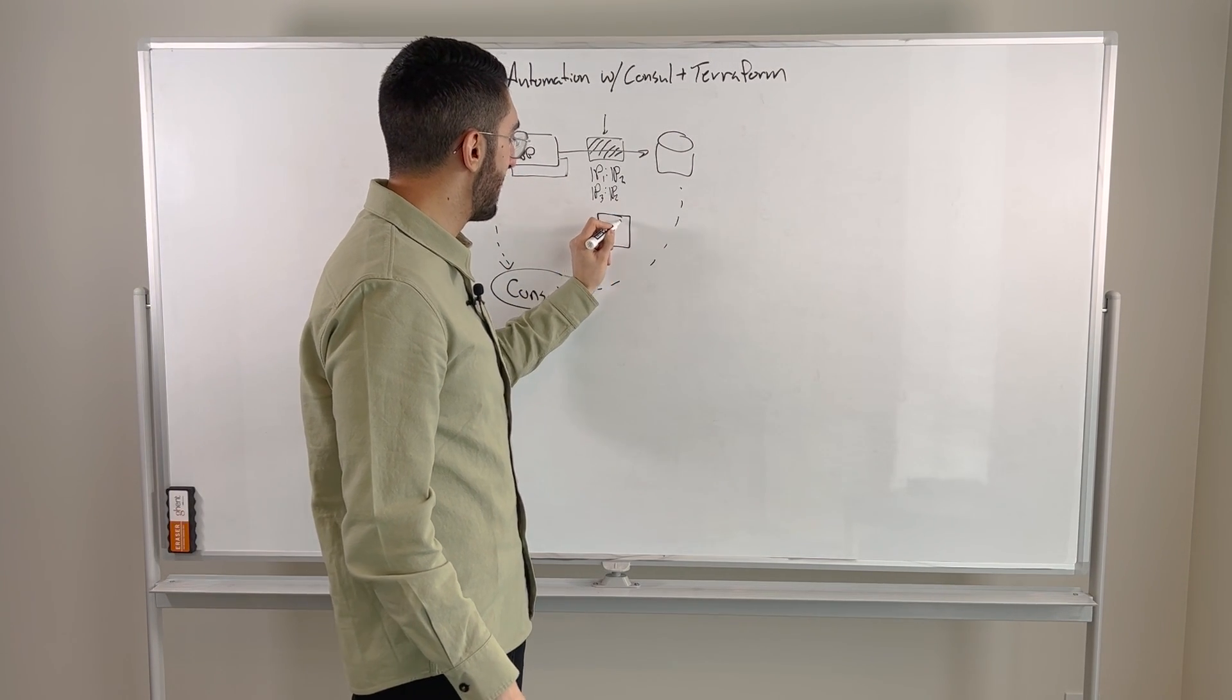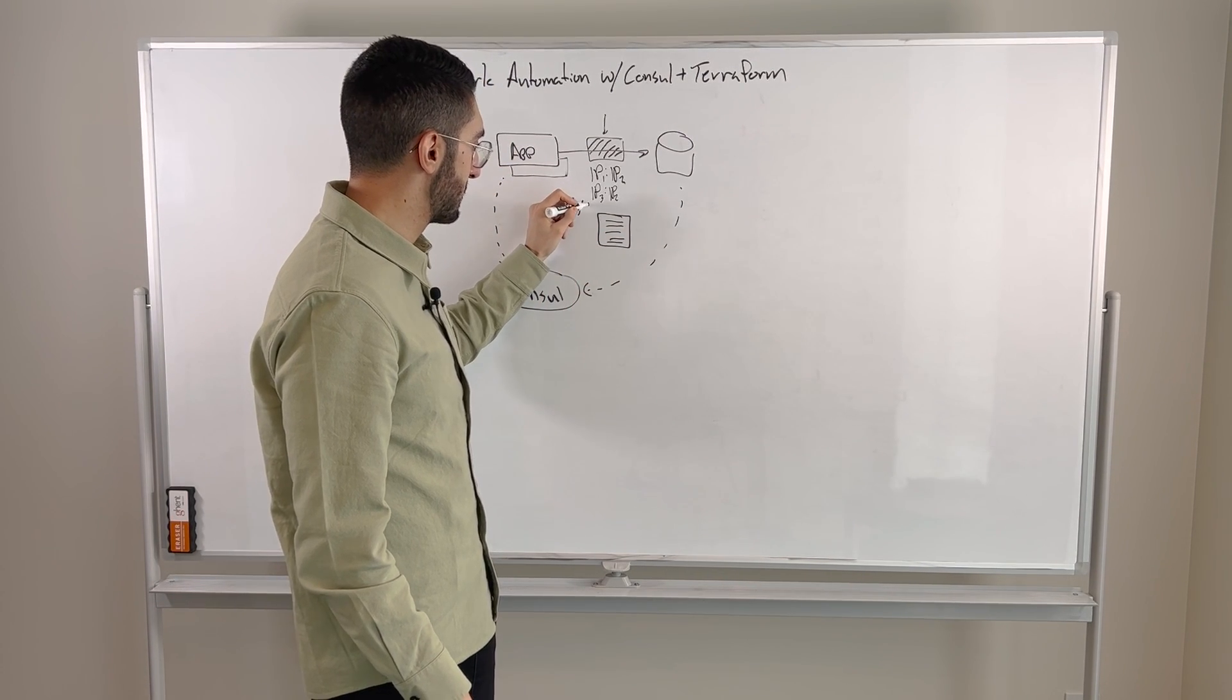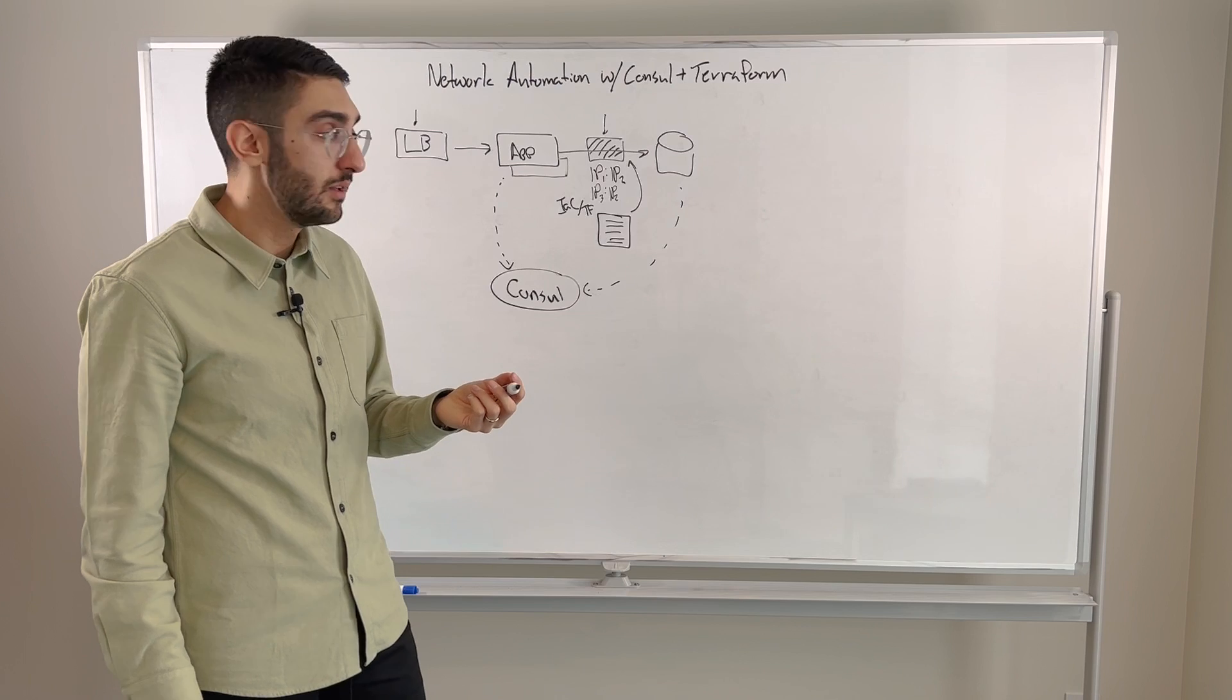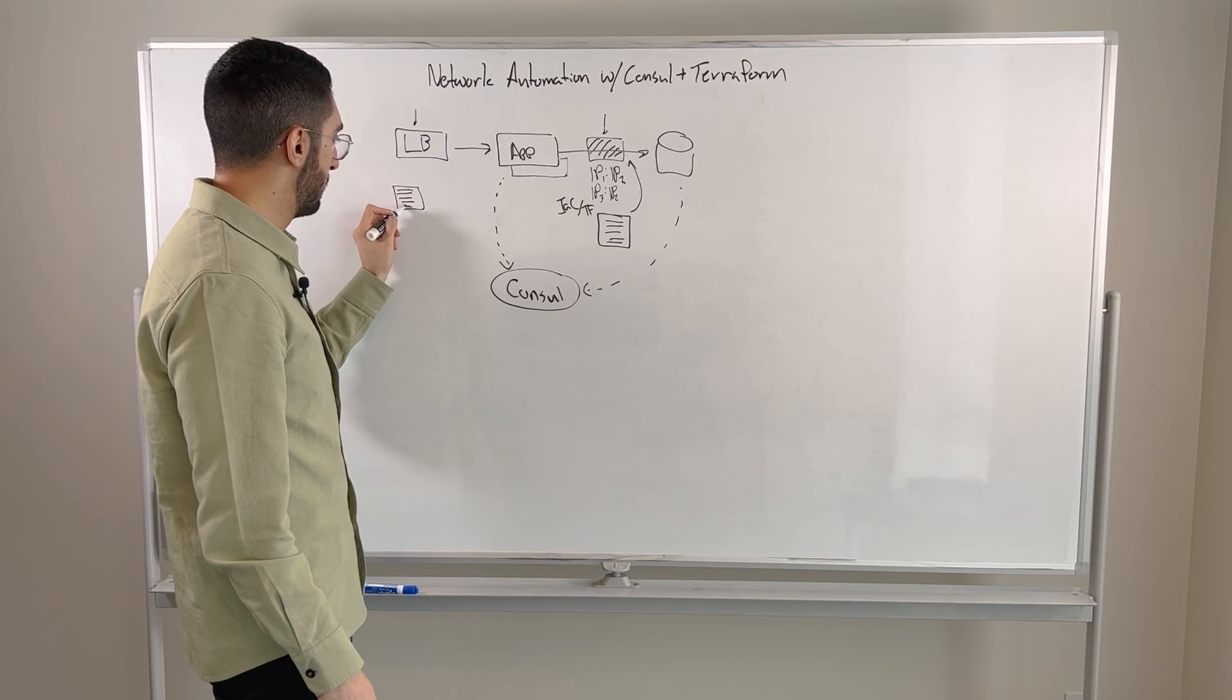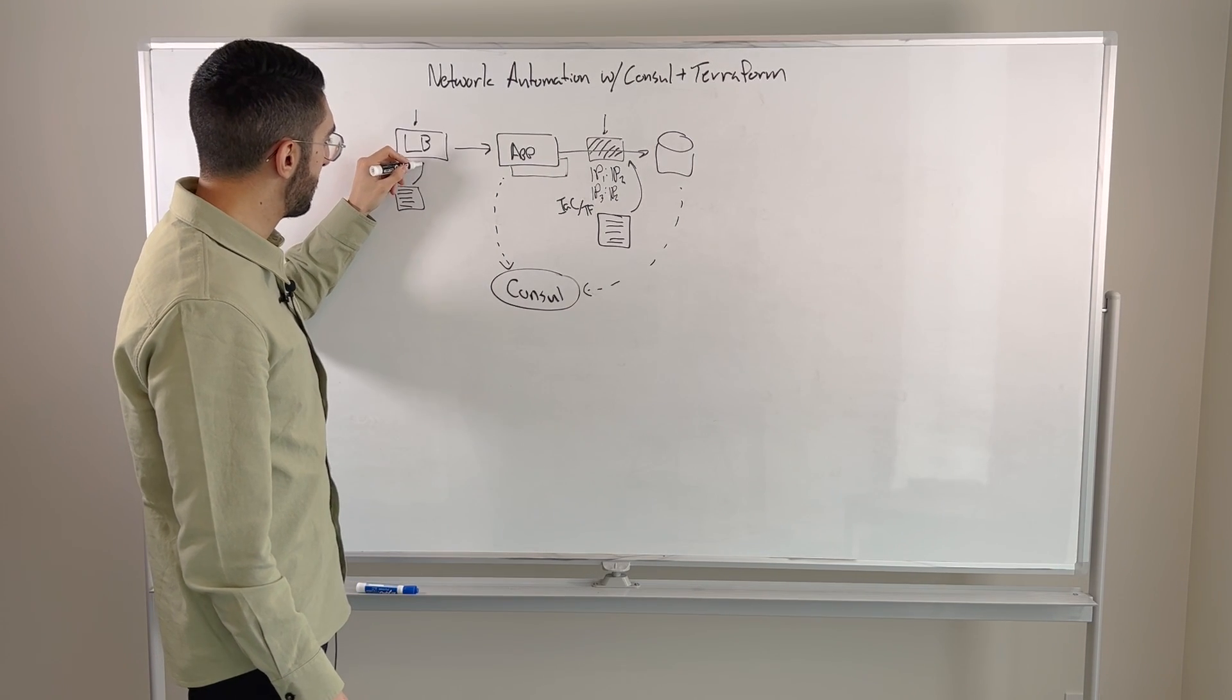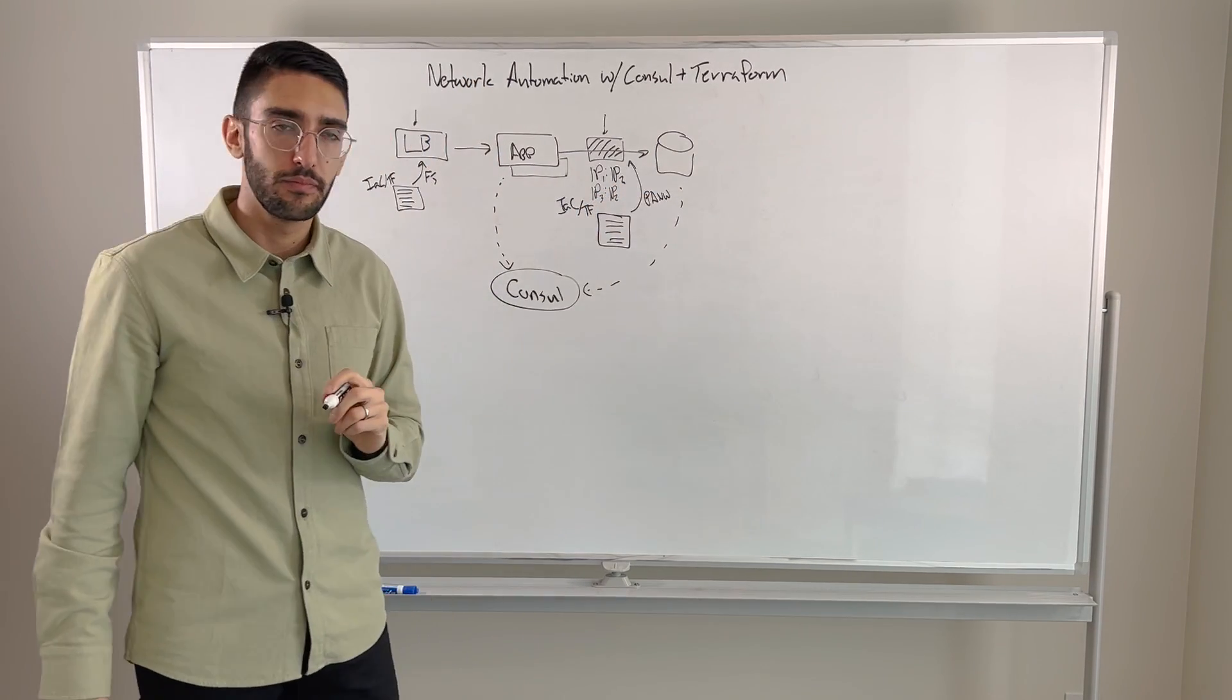So this is really where what we enable is with Terraform. You actually author an infrastructure as code definition using Terraform on how to configure this underlying device. So in this case, this might be a Palo Alto firewall. But over here, we might say, great, I have a different configuration for how I should be doing. Again, this is infrastructure as code with Terraform. And here I might say I'm managing my F5 Big IP device, where this might be my PAN-OS firewall.